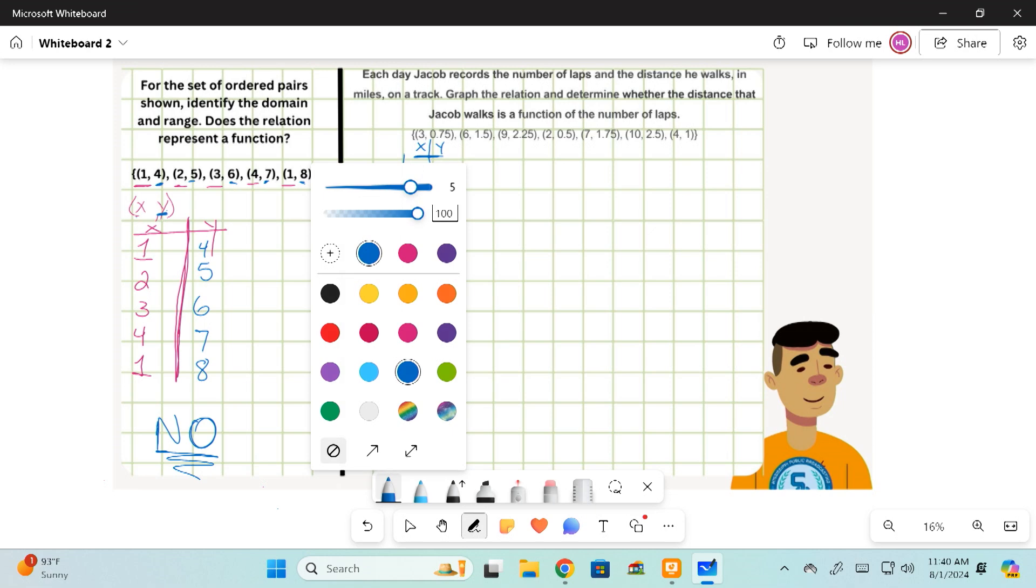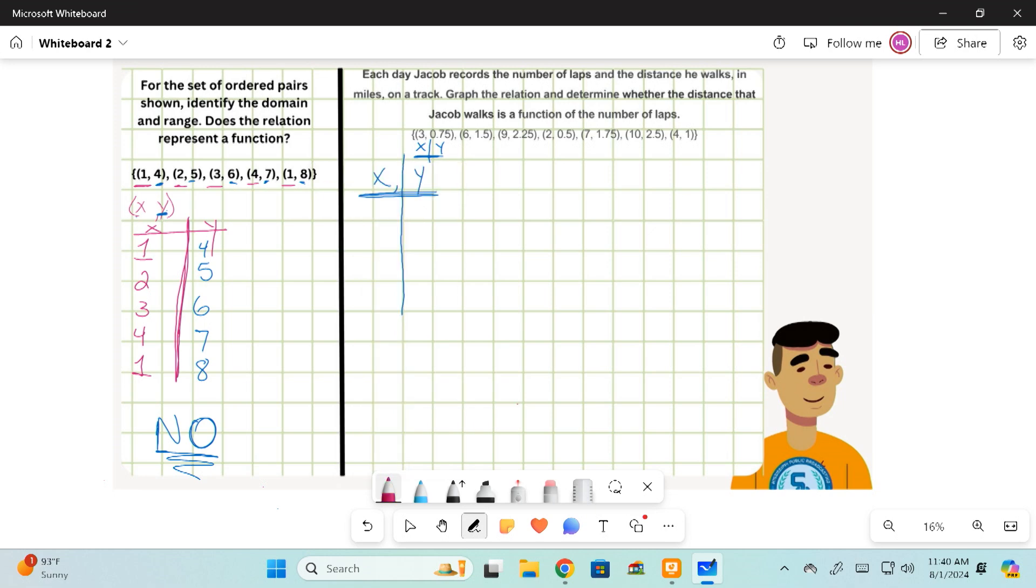My x's are going to be 3, 6, 9. I'm going to underline them so you can see it. 2, 7, 10, 4. Six, let's see, 9, 2, 7, 10, and 4.